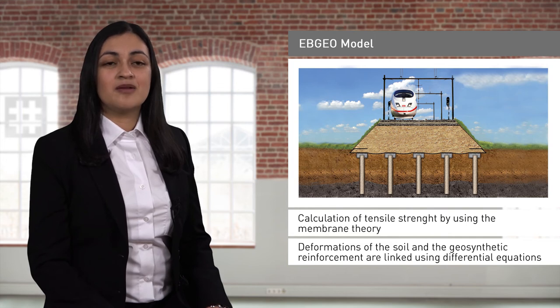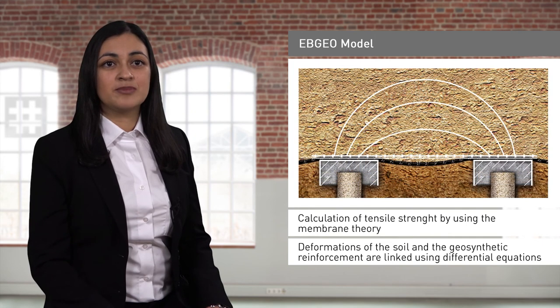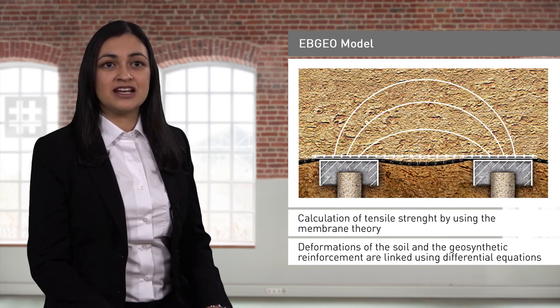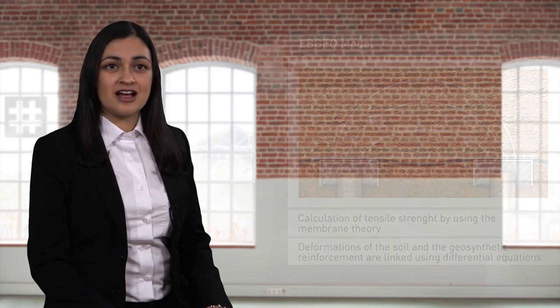To simplify the solution, Chapter 9 of the EBGEO contains graphs to enable iterative analysis. A complete calculation example is also contained at the end of the chapter.